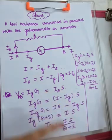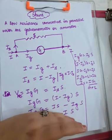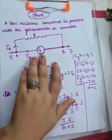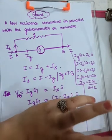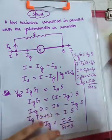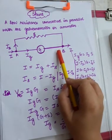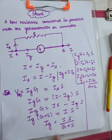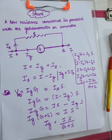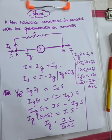The shunt is very smartly attached with the galvanometer. Here is the galvanometer, and we attach the shunt by making a parallel combination. Here is the galvanometer and here is the shunt connected in parallel with it. This is done intentionally because, as I already told you, the shunt is a low resistance, and current will always follow the low resistance path.